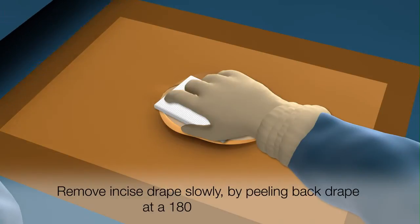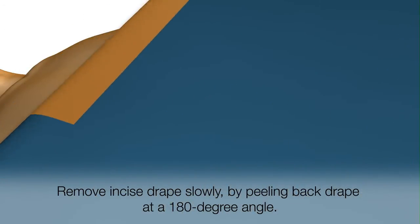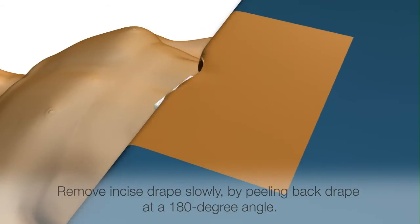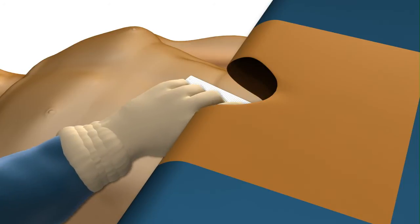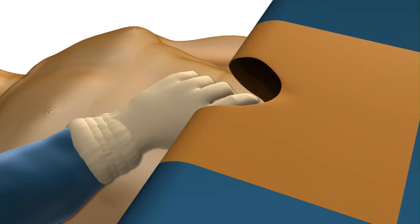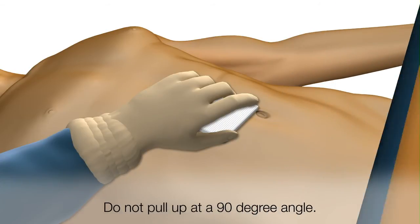It is critical to go low and slow, pulling gently and with even tension, especially around the incision. Do not pull up on the drape at a 90 degree angle.